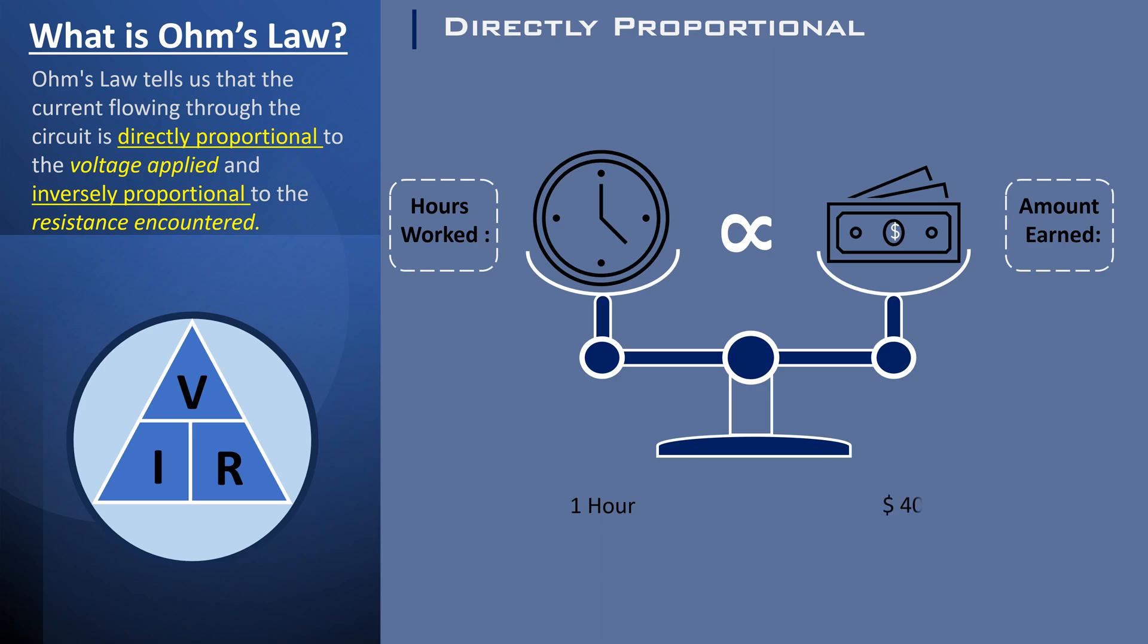if you work one hour and get paid $40, then working two hours is twice as long, would earn you $80. Similarly, working 12 times as long, which is 12 hours, would result in a payment of $480.